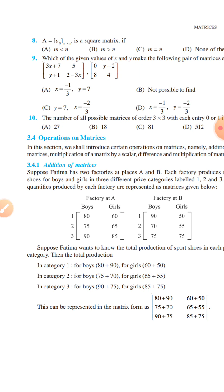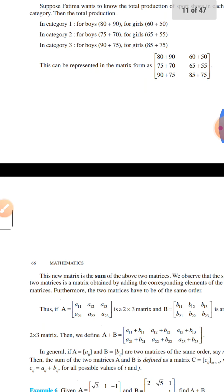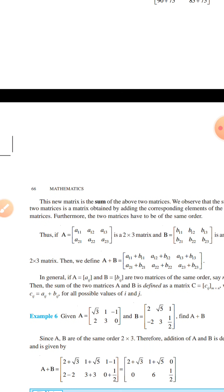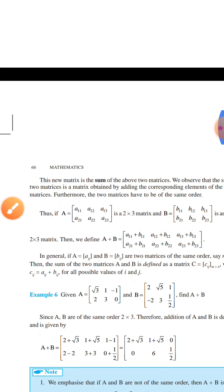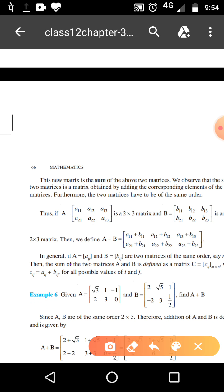The first operation is the addition of matrices. Let A equal to Aij and B equal to Bij. They are two matrices. Then their addition A plus B is defined as Aij plus Bij for each i, j. That means whenever you add the matrices, you just add their corresponding elements.